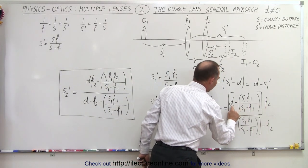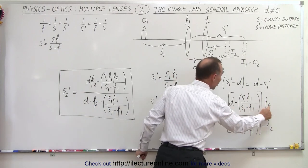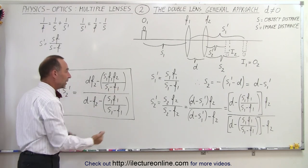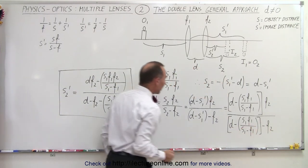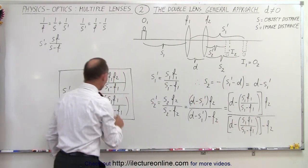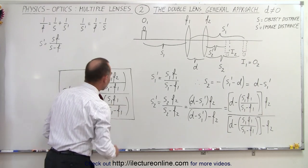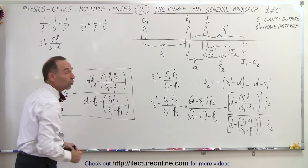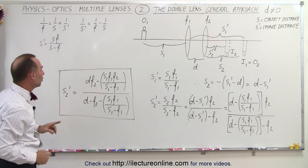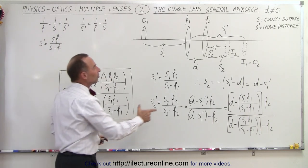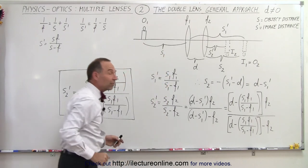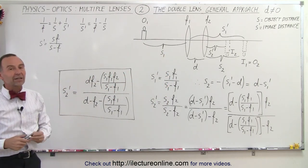In the denominator, since we're subtracting, we get d minus f2, then minus s1·f1 divided by (s1 minus f1). This gives the general equation for the position of the second (final) image when you have two lenses with focal lengths f1 and f2, separated by a distance d, with the object placed at s1. That's how you define the position of the final image.